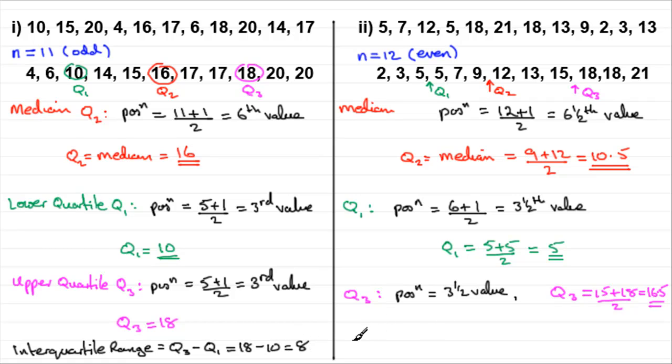So what would be the interquartile range here? I'll call it IQR. Well, that's going to be very easy. Again, Q3 minus Q1, simply 16.5 minus Q1, which was 5, and that's going to give us 11.5.